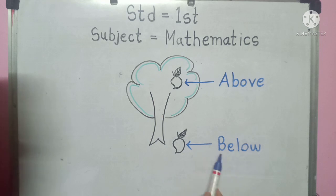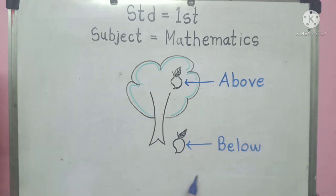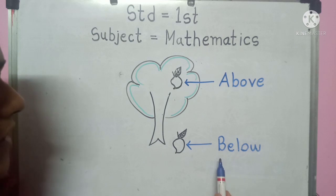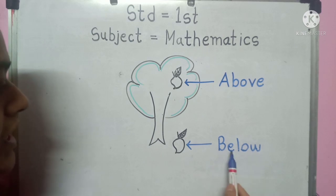Now the next word: below. Below means 'खाली'. What is the spelling of 'below'? B, E, L, O, W — below. Let's say with me students: B, E, L, O, W — below.